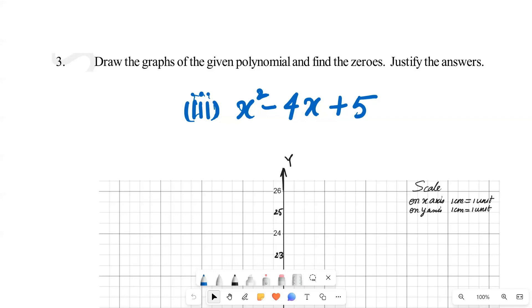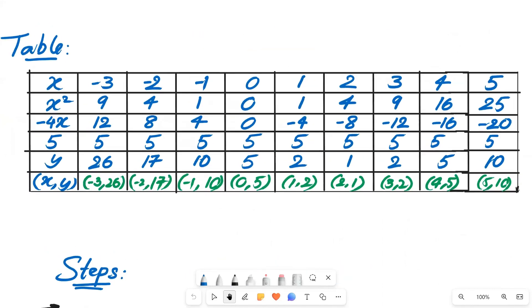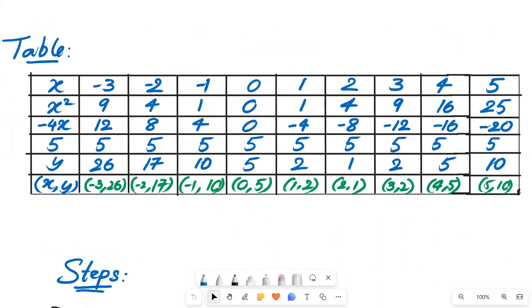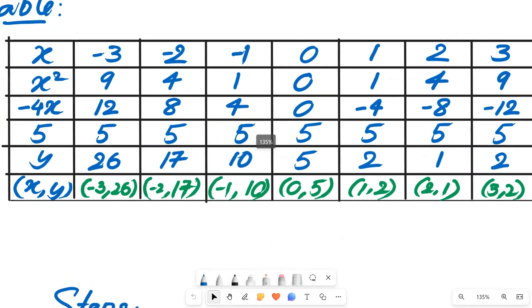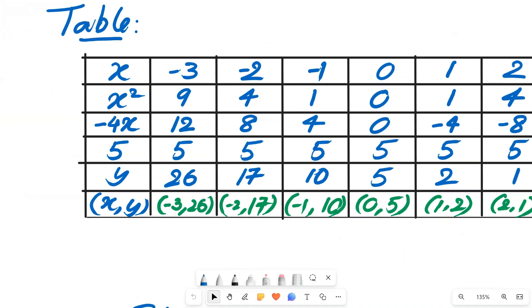and last we need to do the verification though the zeros if we found through the graph is correct or not. So first let's draw the table for this graph. The table is similar to the previous questions when we add the second, third and fourth rows it will be equal to fifth row because I took y = x² - 4x + 5.